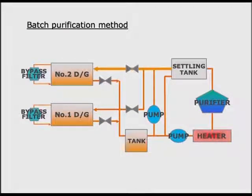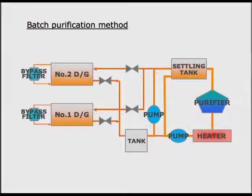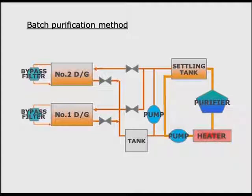Let the already cleaned lube oil flow to number two diesel engine generator and transfer the used lube oil to the settling tank. In preparation for the next replacement, conduct the cleaning treatment for the used lube oil, setting the cleaning time so that the lube oil of the settling tank flows to the purifier 20 times or more.